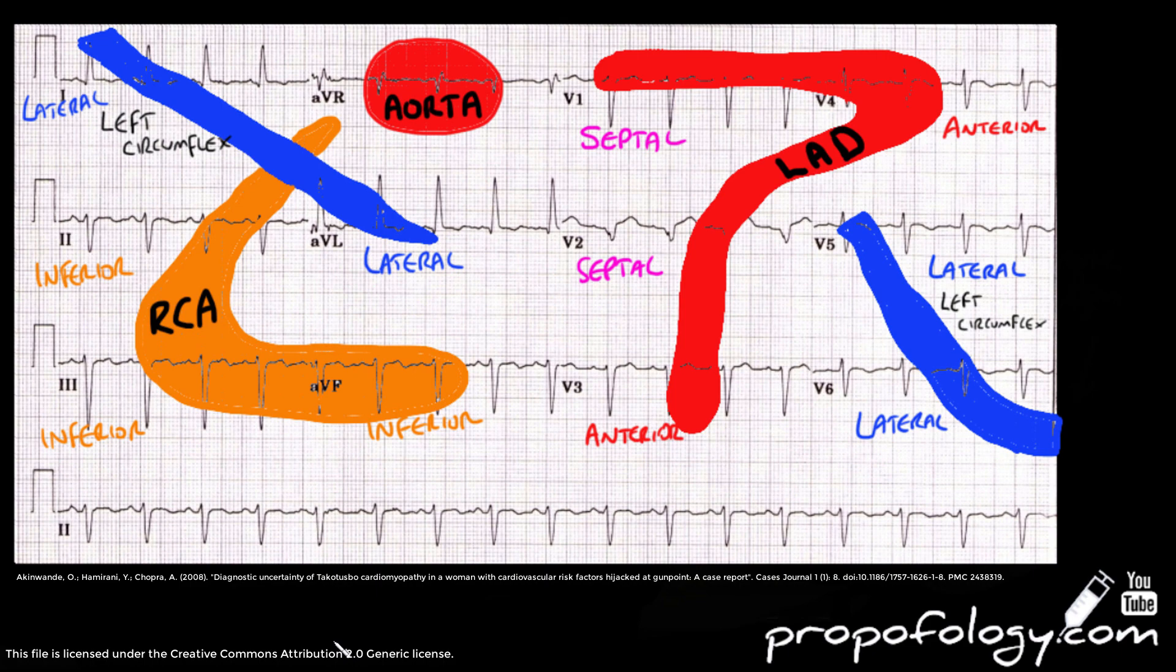You can see I've written some of the territories. You've got the anterior, the lateral, the septal, and the inferior. The reason I've labeled them like this is to help you understand the territories better, because we forget them sometimes when we're looking at ECGs. Quite often questions in the exam can say, for example, the person has ST elevation in V1 through to V4, which is the most likely coronary artery affected.